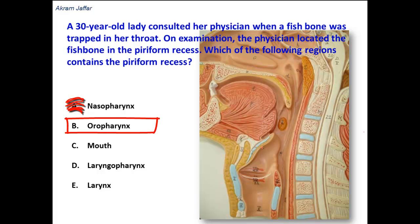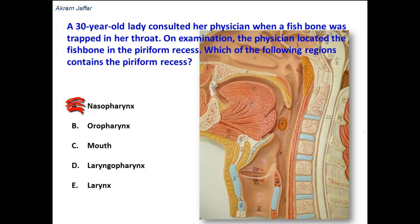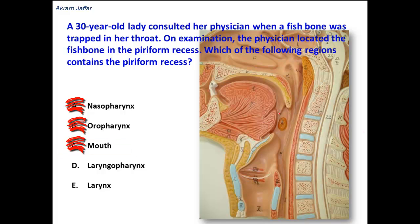Option: Oropharynx. This is the region of the oropharynx, where we have the palatoglossal and palatopharyngeal folds. There is no pyriform recess here. In front of the epiglottis there is a vallecula. The mouth is located in front of the palatoglossal fold, and there is no such recess in the mouth either.